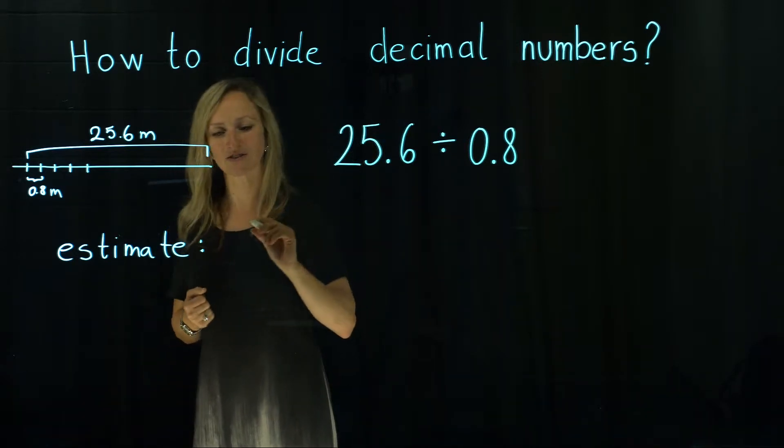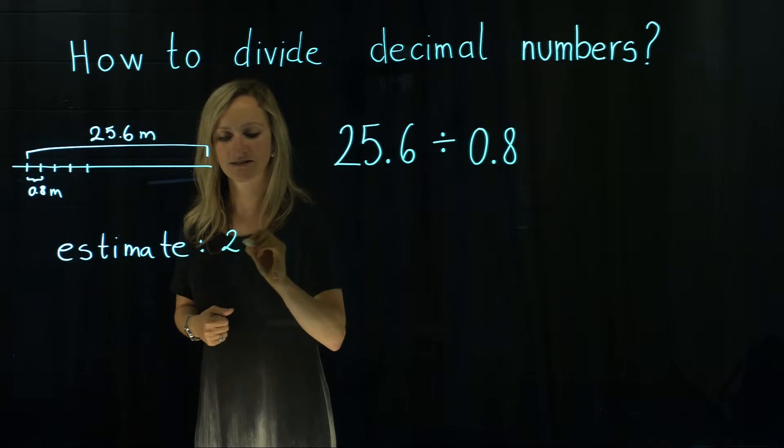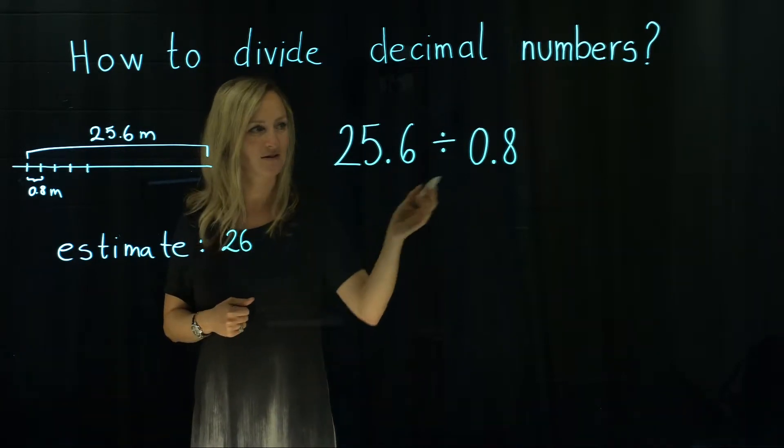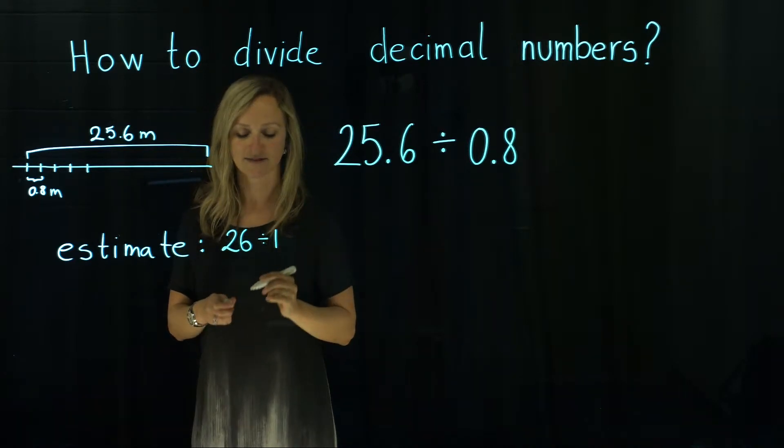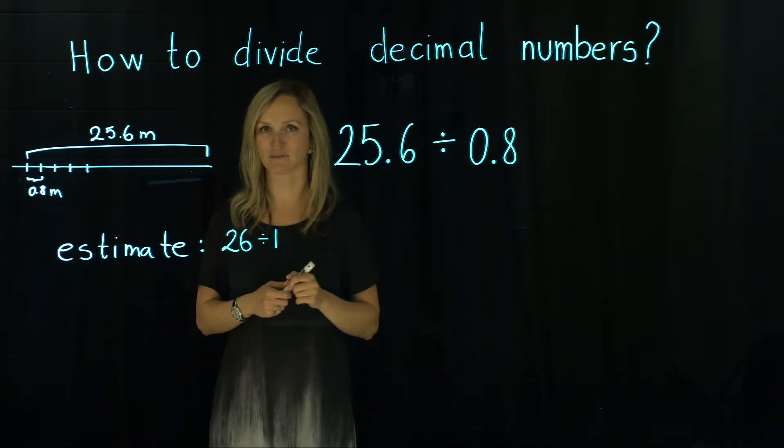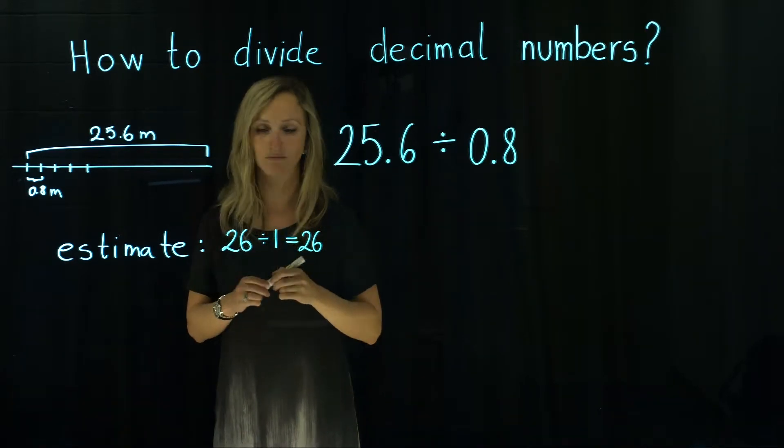Let's do some estimation first. 25.6 is roughly 26 meters. 0.8 is roughly 1 meter. So when we divide 26 by 1 we know that we get exactly 26 plants.